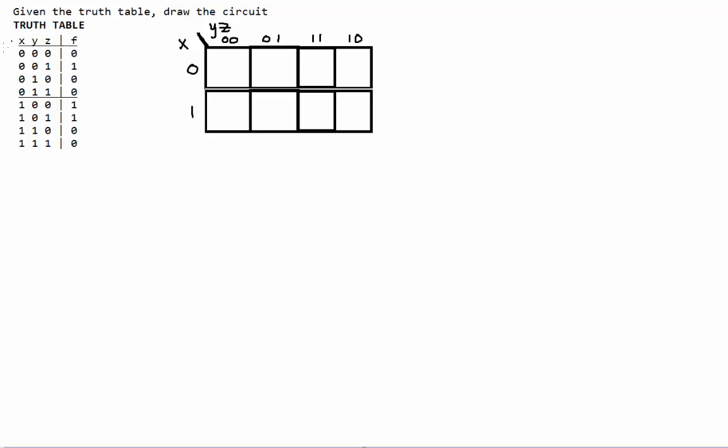Now we're going to take a look at our truth table. These f values here are completely arbitrary, they hold no real significance. When x, y, and z are 0, f will also be 0, so we'll put a 0 in there. We can just look for the 1s, so we have a 1 here, a 1 here, and a 1 here.